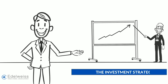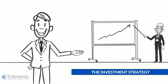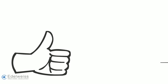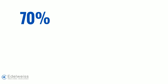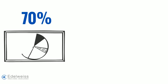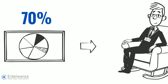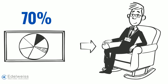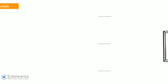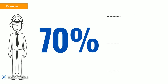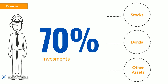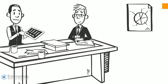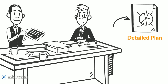Step four: the investment strategy. Always remember a simple rule of thumb while drawing out an investment strategy — the percentage of your portfolio you allocate in stocks is inversely proportional to your age. For example, a 30 year old could put 70% of his investments in stocks and invest the rest in bonds and other assets. Your financial advisor will come in handy to create a detailed plan.